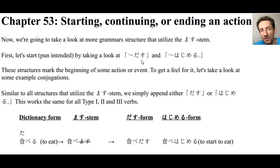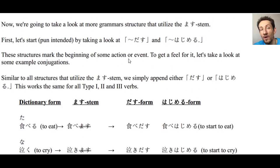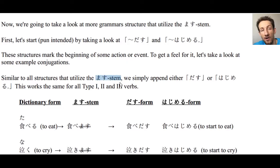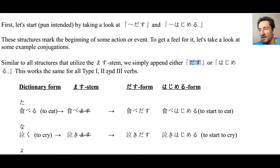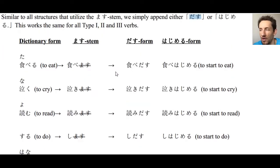We're going to first look at using dasu and hajimeru to express starting some action. The structure is really quite simple — all we have to do is take the masu stem of a verb, whether type 1, type 2, or type 3, and append dasu or hajimeru, and that's it. We get the meaning of starting that action. Let's look at some examples to make it clearer.